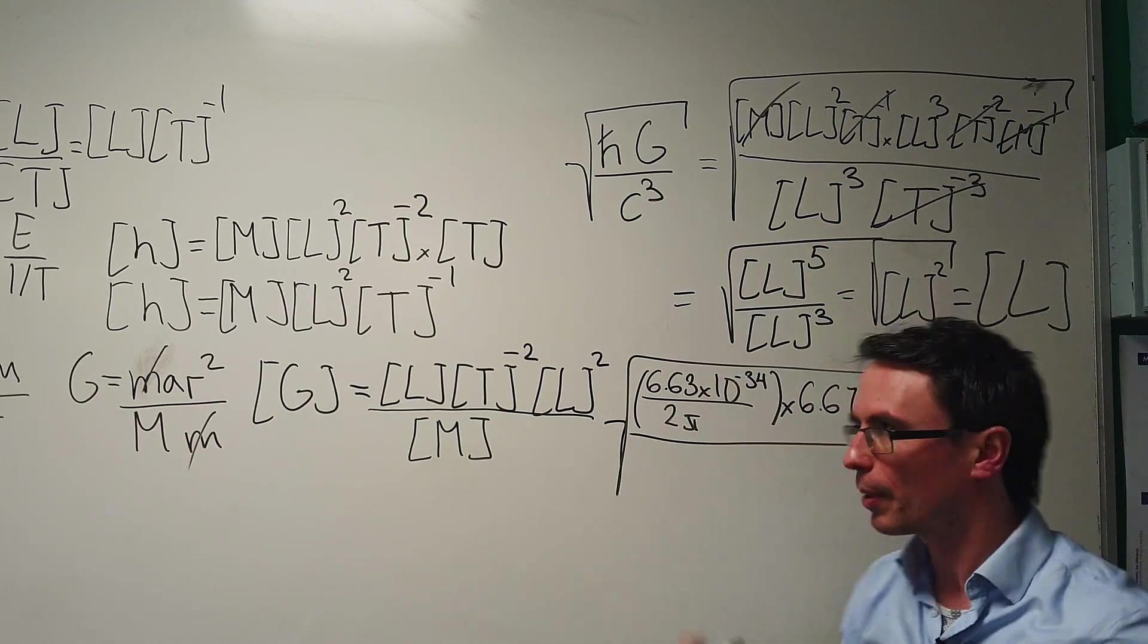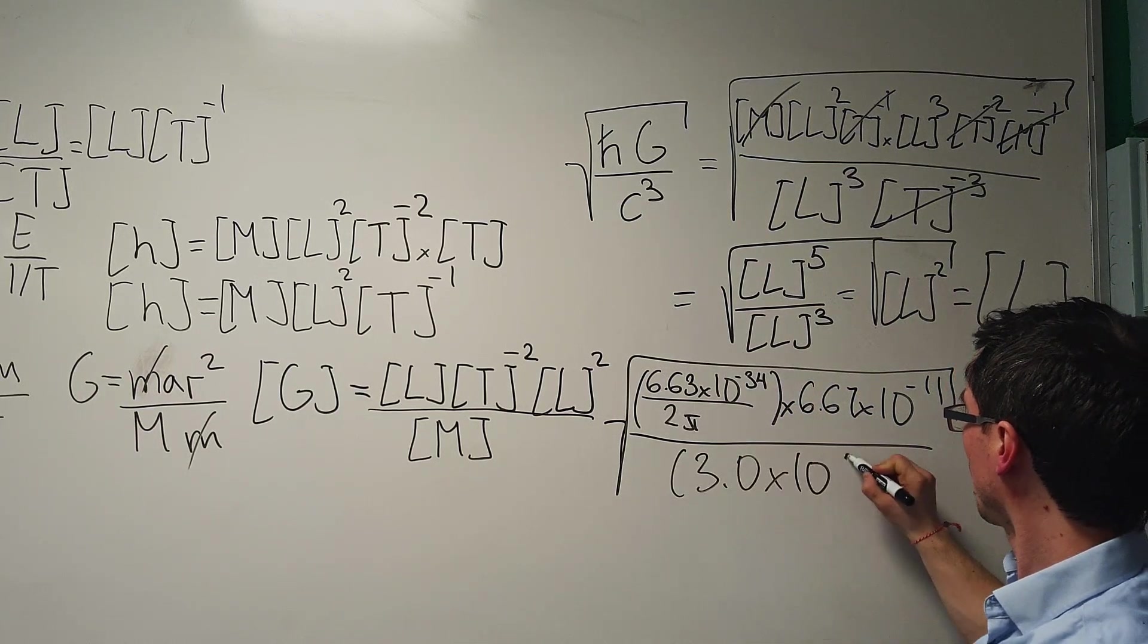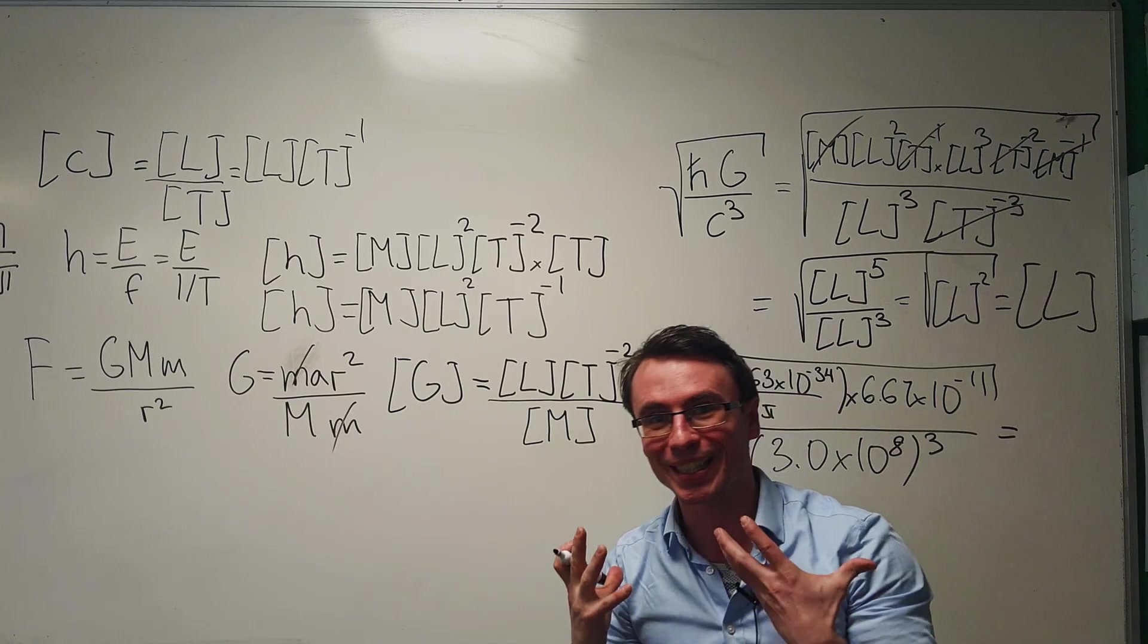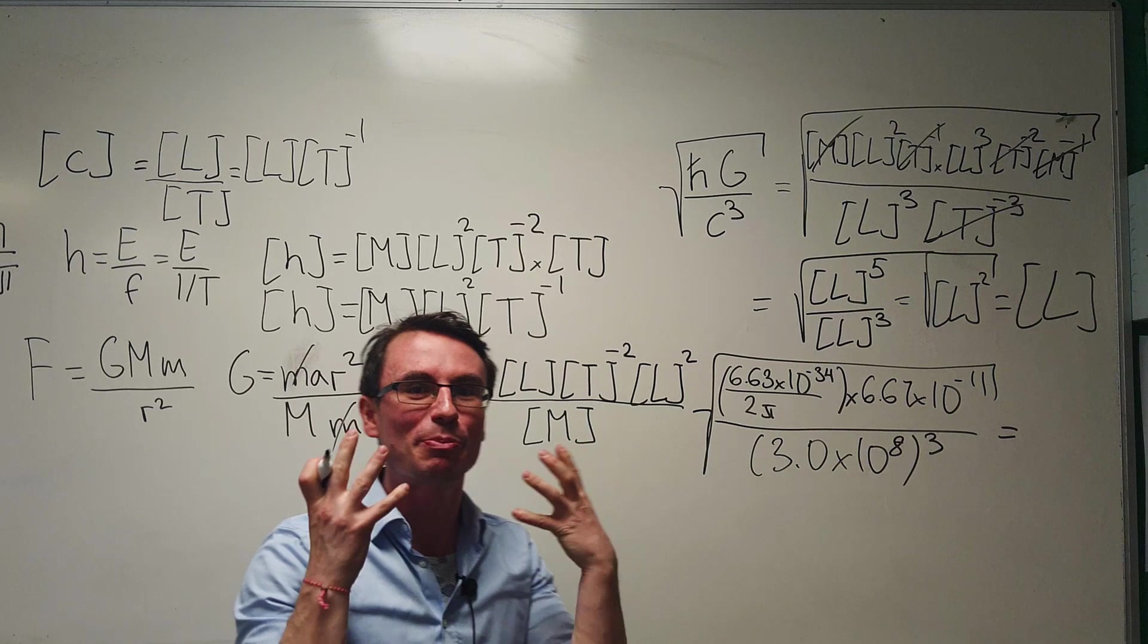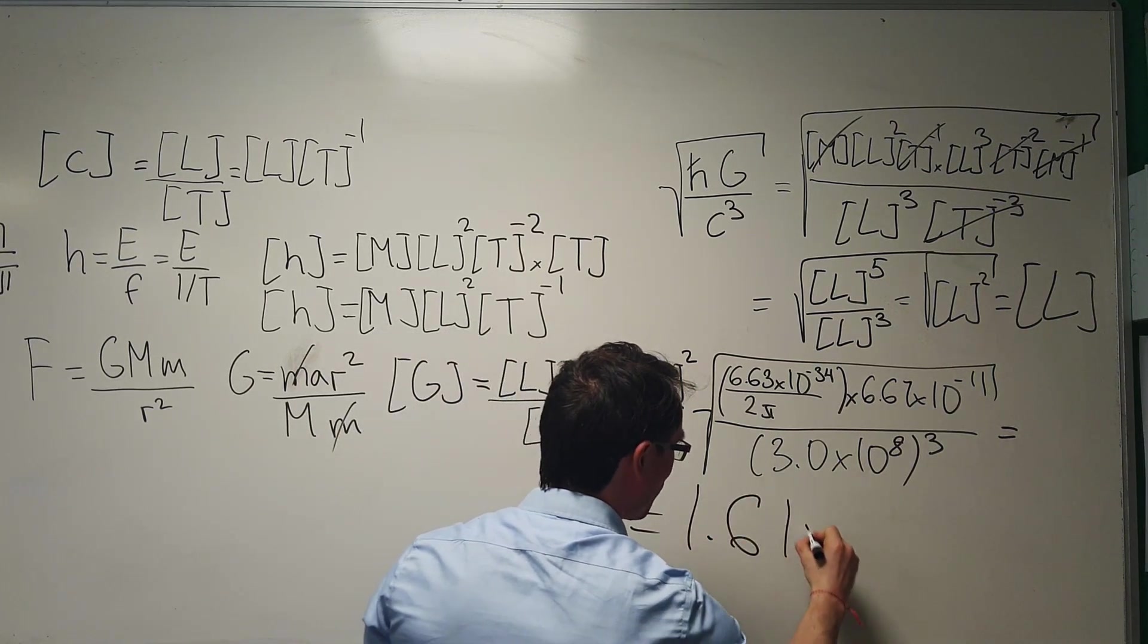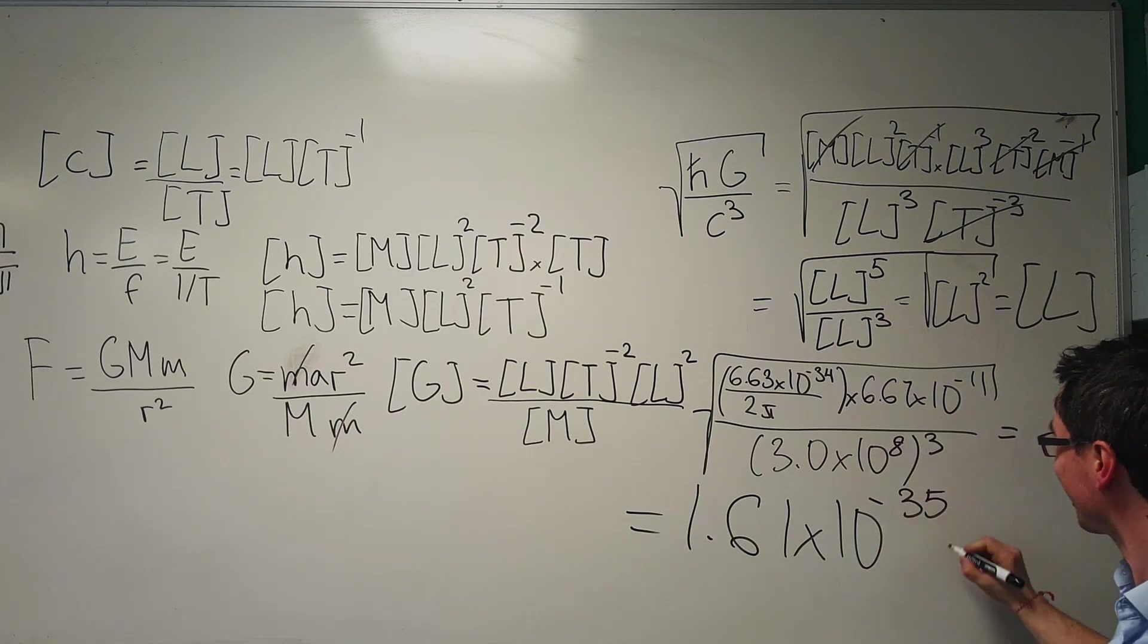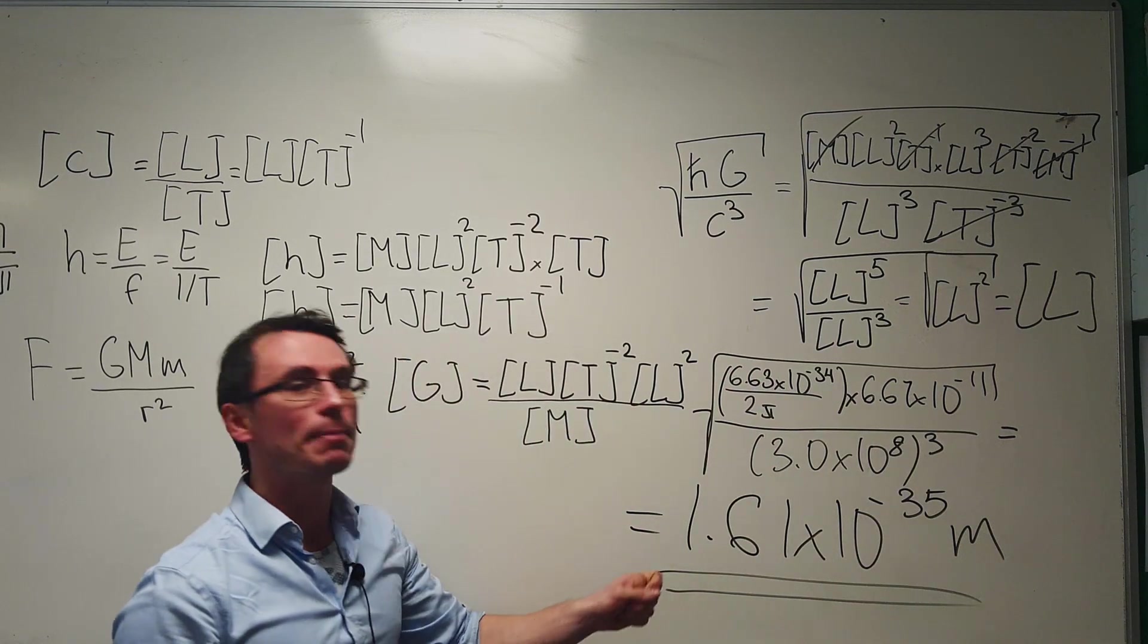Let's divide this by the speed of light cubed, which is around 3.0 times 10 to the 8 meters per second. That's raised to the power of 3. If we put this into a calculator, we're going to find the ultimate smallest length in meters, and that is approximately 1.61 multiplied by 10 to the power of minus 35 meters. And this is the Planck length.